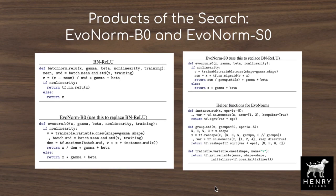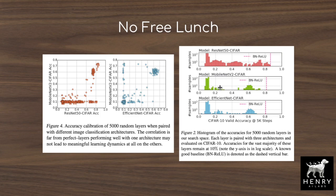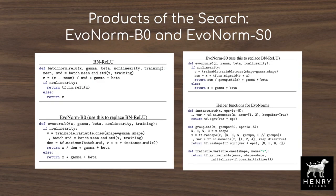The products of this search are EvoNorm B0 and S0 — the difference between them being whether they use batch statistics or just a single image's activations. The authors provide TensorFlow implementations in Appendix A of the paper; in Keras, you simply use model.add with their custom function. For custom architectures not covered by ResNet-50, MobileNet V2, or EfficientNet, Appendix B provides 10 different variants of each normalization activation layer, which you can tweak to get additional performance gains.